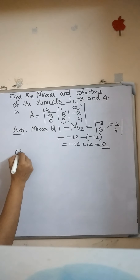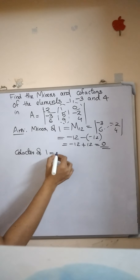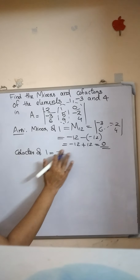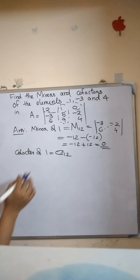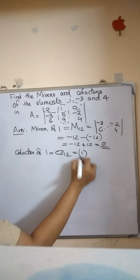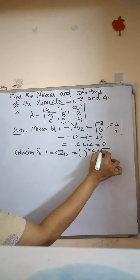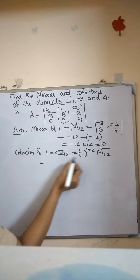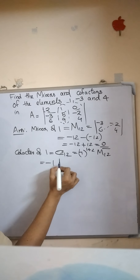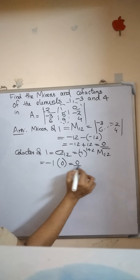The cofactor of element 1 is the signed minor, denoted by C12. C12 equals minus 1 raised to 1 plus 2 into M12. Minus 1 raised to 3 is minus 1, and minus 1 into M12 is minus 1 into 0, which equals 0. So the cofactor of 1 is also 0.